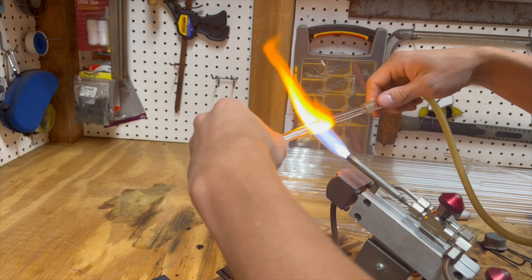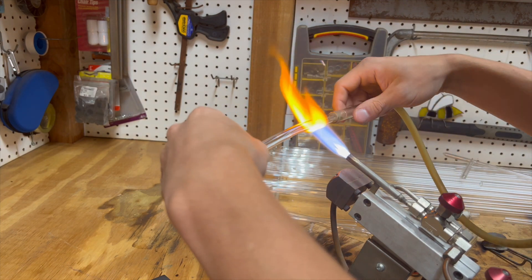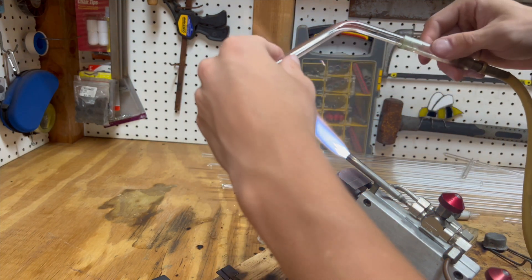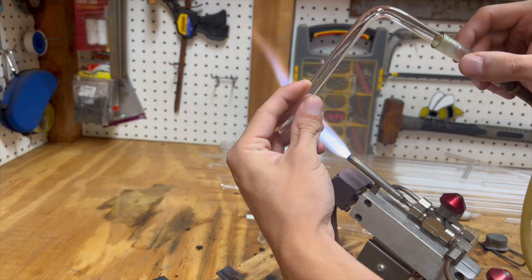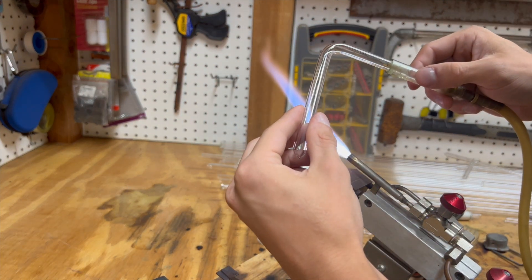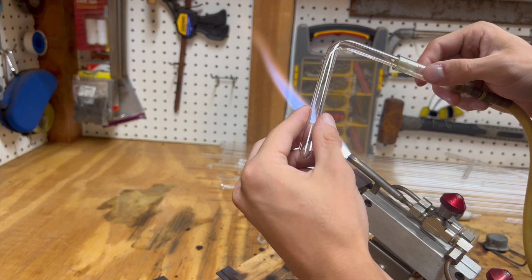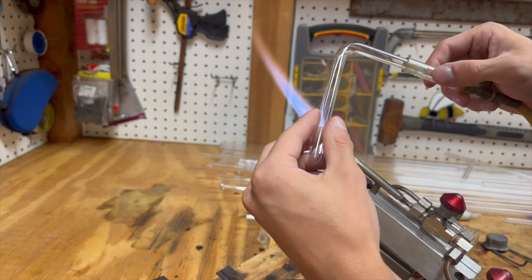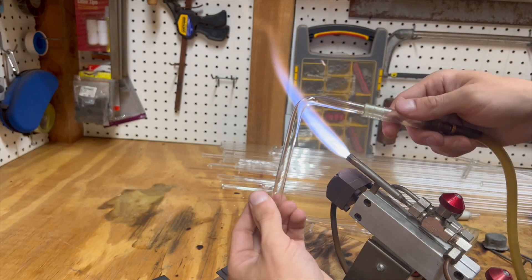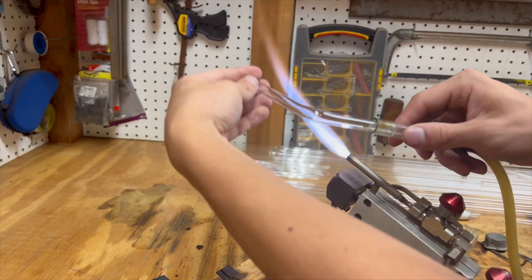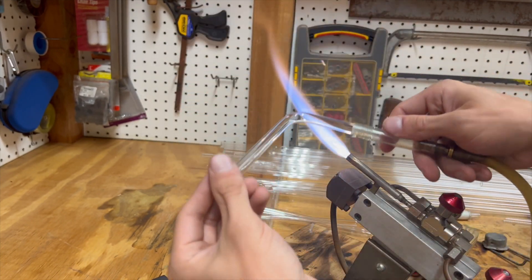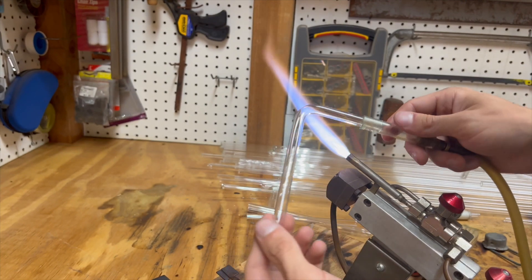Once you have enough heat in there, then you're going to take it away out of the flame and bend it. And while you're bending it, you want to blow into the blow hose assembly to apply pressure inside. If you don't do this, it will kink and mess up your bend. And there you have it. Your tube's done. And it's a quite quick and simple process.